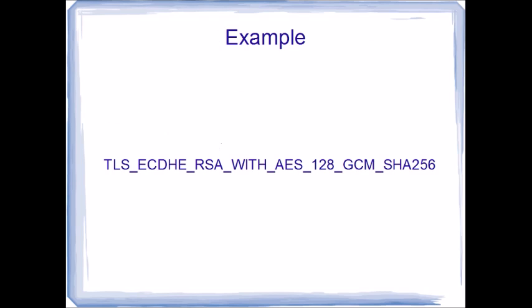An example might look like this, where this section right here represents what algorithm is used for the key exchange. In this case it's elliptic curve Diffie-Hellman.